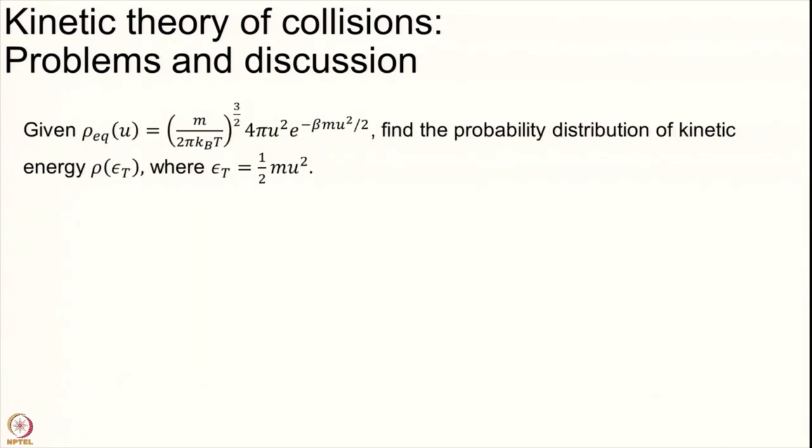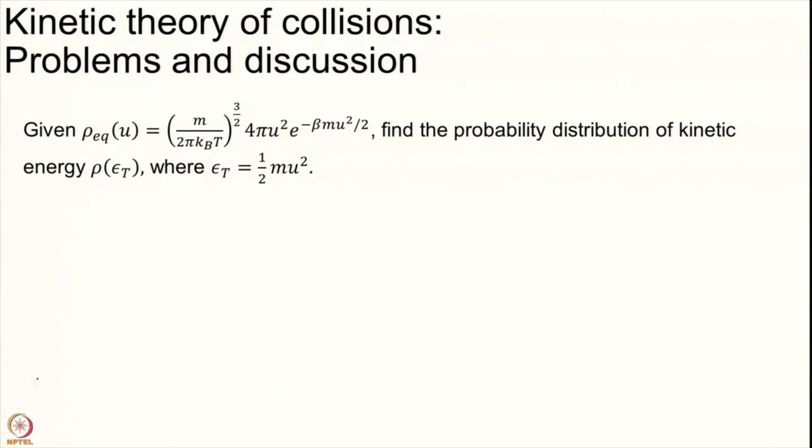Let us look at the next question about transforming between different variables. This is extremely important - collision theory is really built upon it. You should be comfortable converting between different variables. We've done this while deriving, but let's do it explicitly once more. This is very important - you should practice this a lot. I have given the equilibrium distribution in speed and the question asks to find the distribution in kinetic energy. Remember the volume element. If you do not practice, you will forget volume elements in your exam.